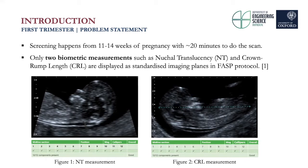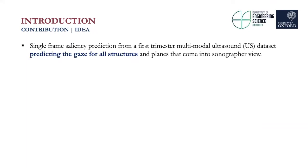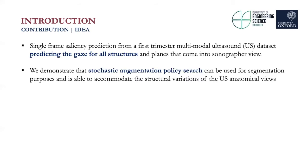Due to advances in technology, spatial resolution, and appearance of detailed ultrasound structures, there is potential to measure more than just NT and CRL in the first trimester. Our contribution is twofold: we consider single frame saliency prediction from a first trimester multimodal ultrasound dataset, predicting the gaze for all structures and planes that come into sonographer view. The bulk of our architecture is focused on stochastic augmentation policy search, which we demonstrate can be used for segmentation purposes and is able to accommodate the structural variations of ultrasound anatomical views.